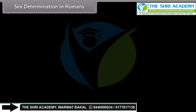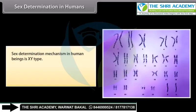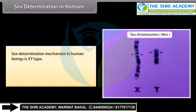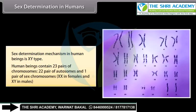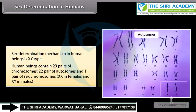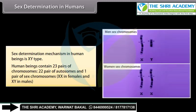Sex determination in humans: The sex determination mechanism in human beings is XY type. Human beings contain 23 pairs of chromosomes — 22 pairs of autosomes and one pair of sex chromosomes, XX in females and XY in males.